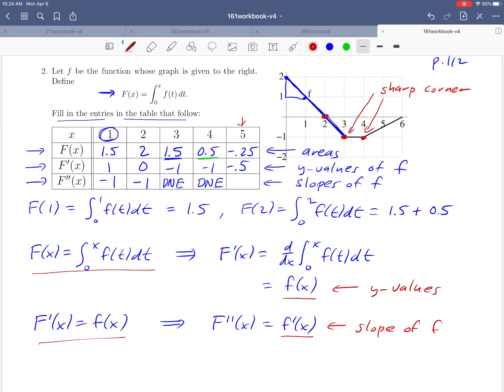Finally, at x=5, we're on a line segment with rise over run of 1/2, giving a slope of 0.5 for F''(5). We have now completed the table.